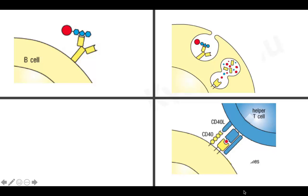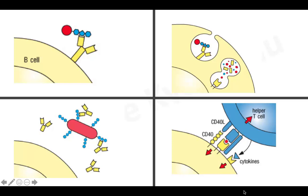T cells express CD40 ligand that binds to CD40 on the B cell surface, and T cells secrete different cytokines for B cell differentiation. All these signals result in activation and differentiation of the B cell into plasma cells, which secrete antibodies. Although the B cell is activated through the protein component, the antibody molecules secreted can recognize the polysaccharide — because of link recognition. And because of thymus-dependent activation, B cells differentiate not only into plasma cells but also into memory cells, which is why conjugate vaccine protects children and older adults for a long period of time.